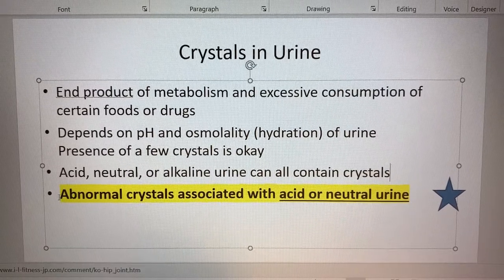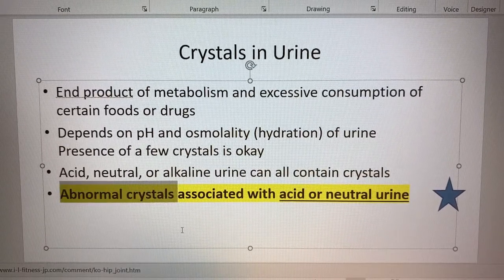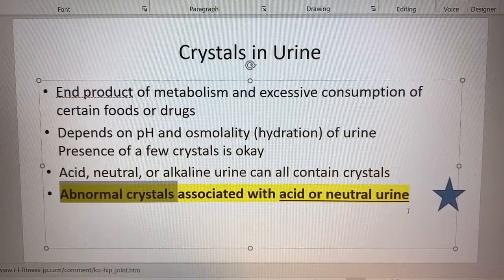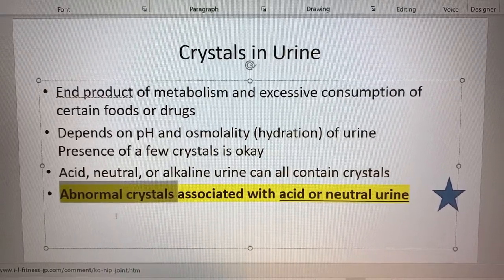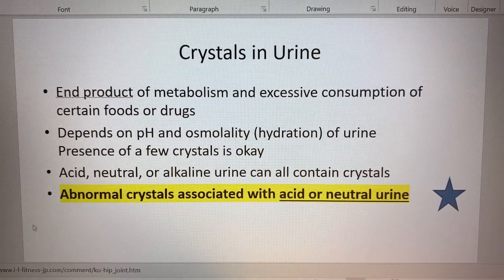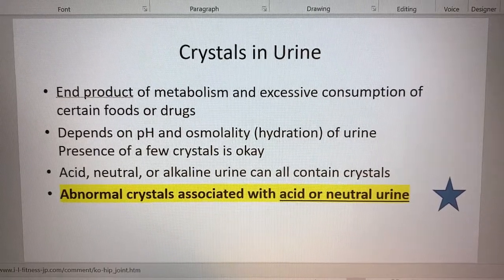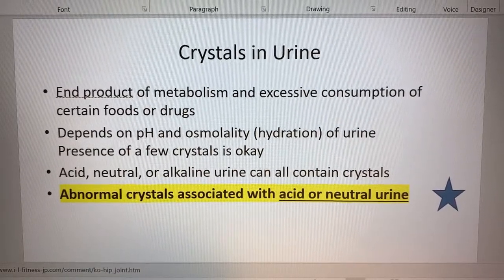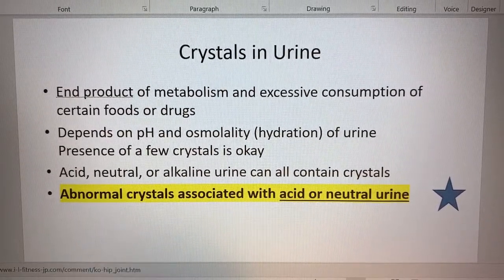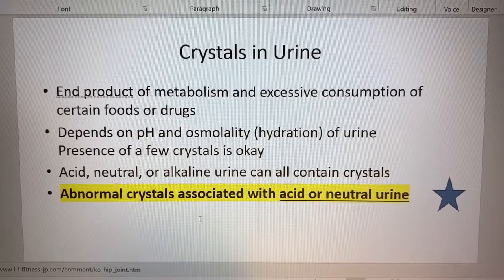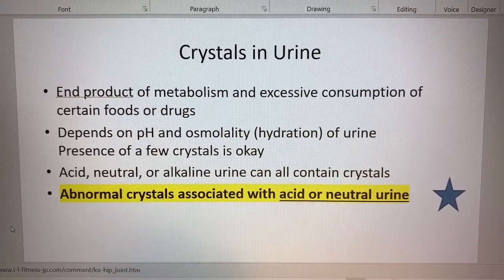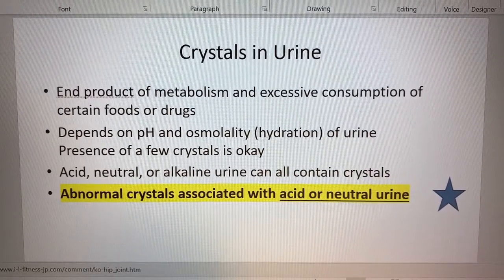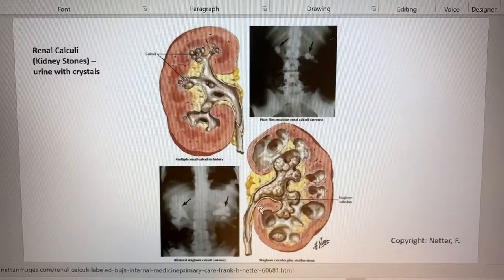Abnormal crystals - things that interfere with the flow of urine and the comfort of your patient - are associated in this exercise with acidic or neutral urine. But you could have alkaline urine and a really profound renal calculus called a staghorn calculus with a basic or alkaline urine. But that's not part of this laboratory, so let's stick with what's in the lab exercise we're going to see.